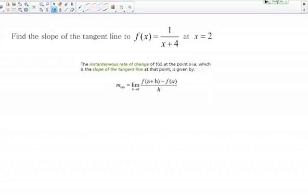Let's practice finding the slope of the tangent line at a point with this problem. We want to find the slope of the tangent line to f of x equals 1 over x plus 4 at the point x equals 2.